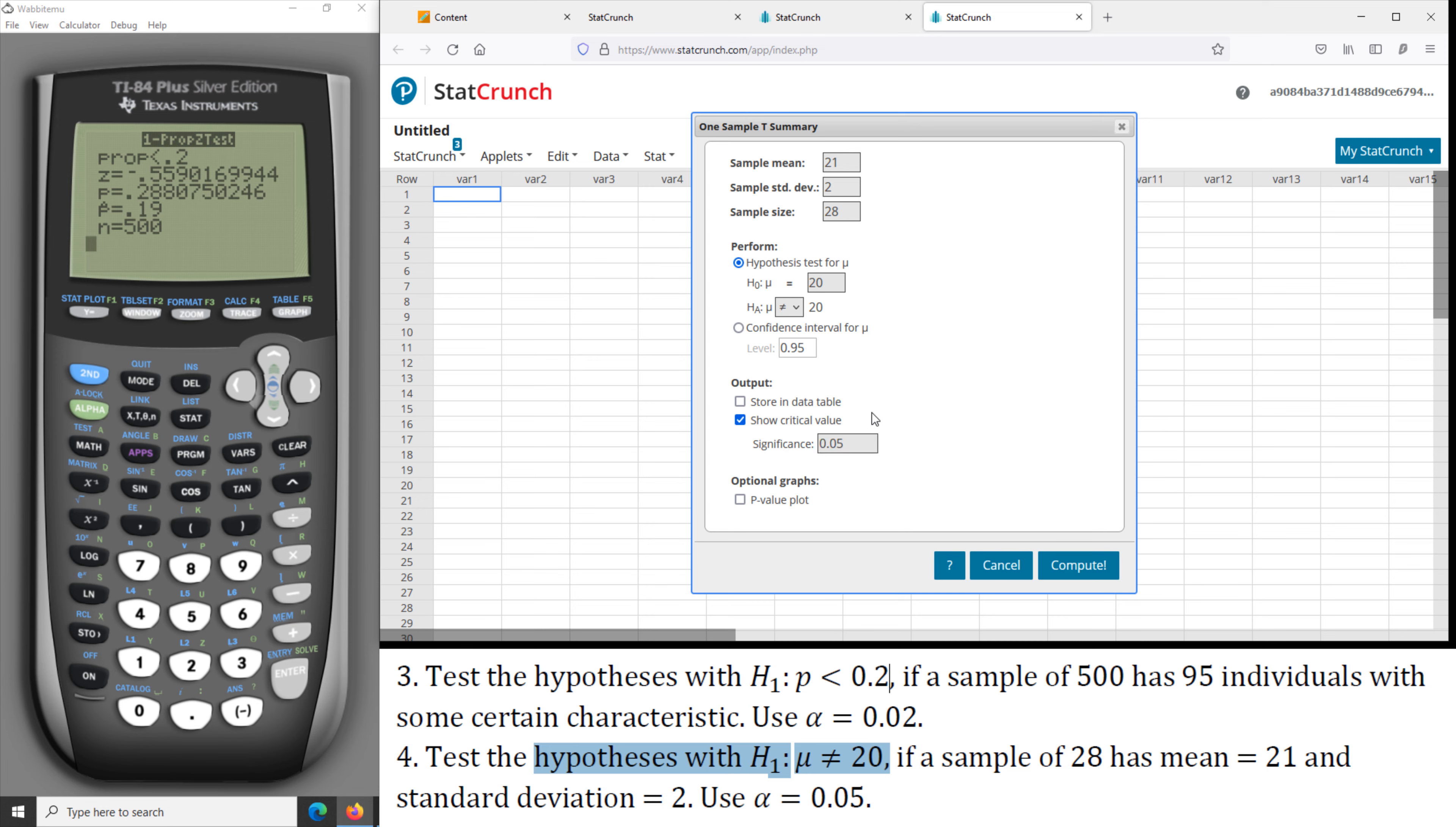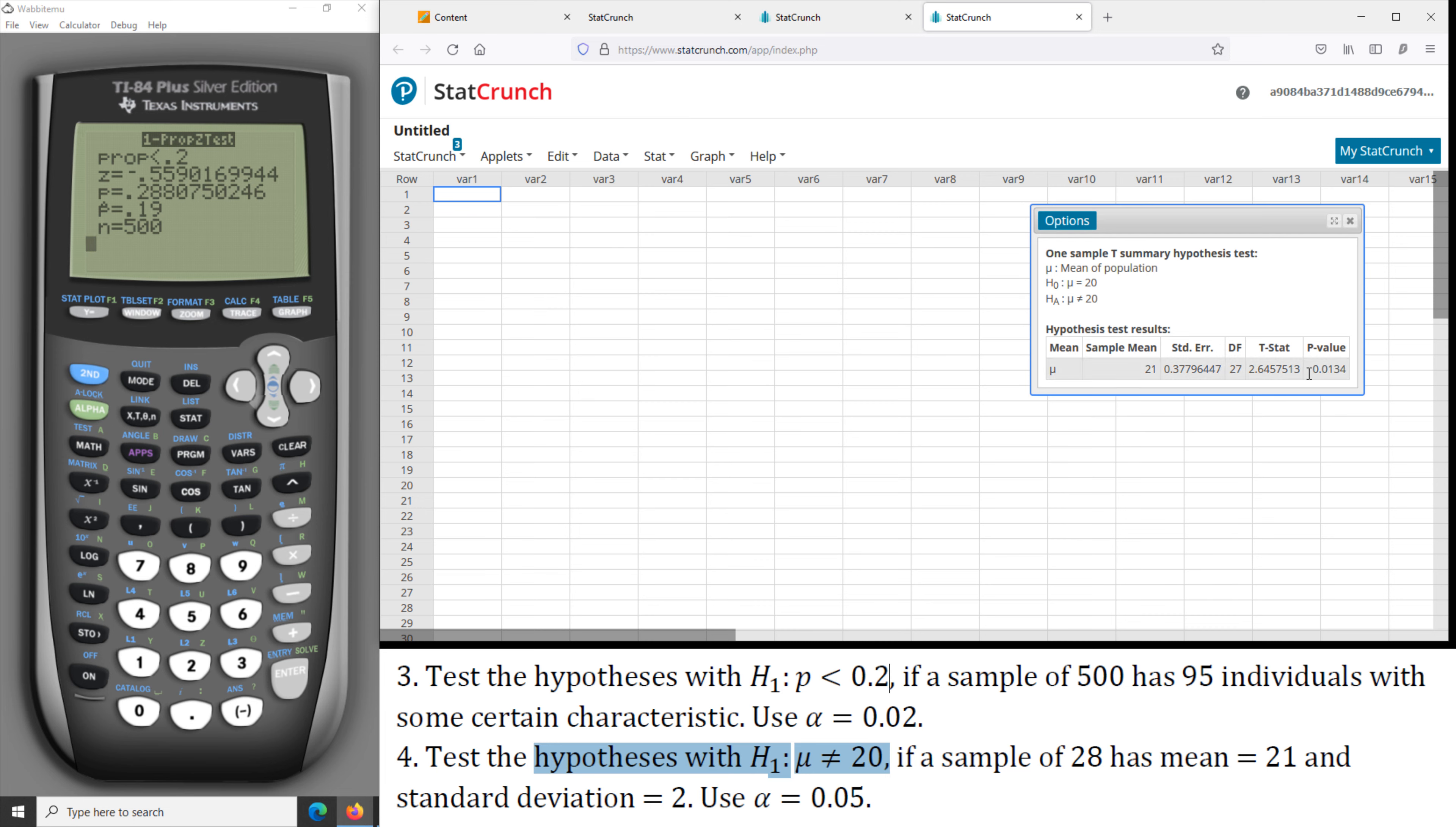And we compute. And we have the P-value of 0.0134, that is less than alpha of 0.05, so we reject the null hypothesis.